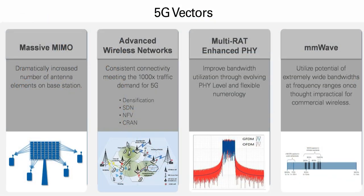At National Instruments we decided that 5G is an extremely broad set of requirements and areas that need to be prototyped, so we focused our efforts into four main areas: massive MIMO; advanced wireless networks and new network topologies; multi-RAT and enhanced physical waveforms; and millimeter wave, which operates at higher frequencies than those traditionally used for wireless communications today.